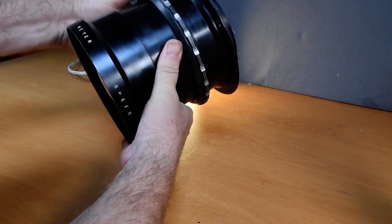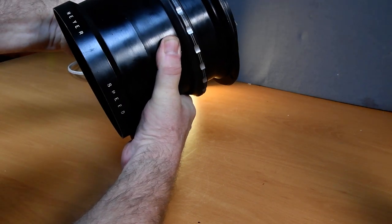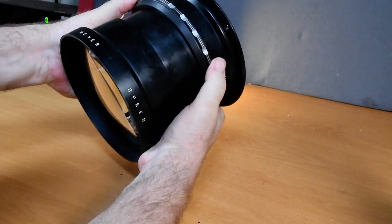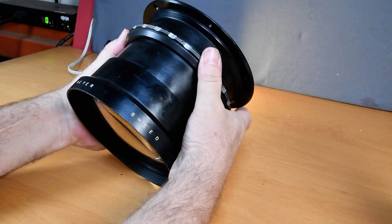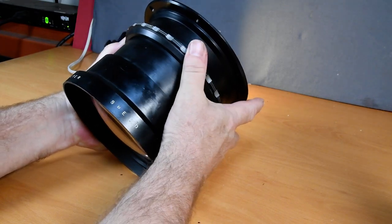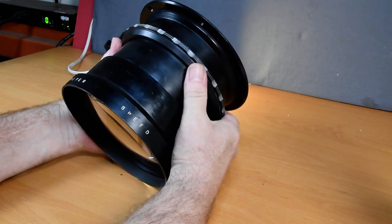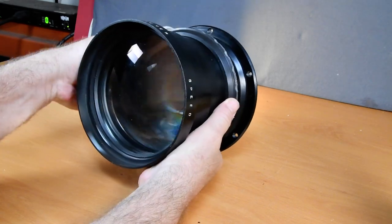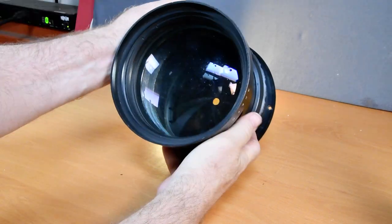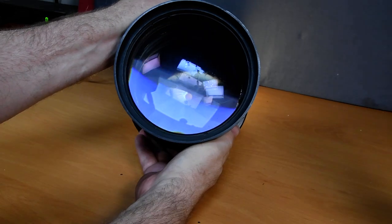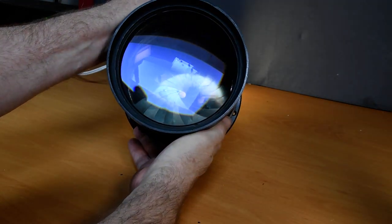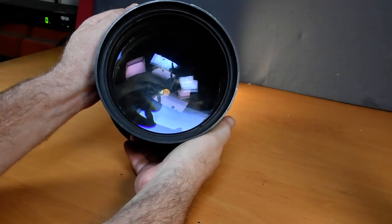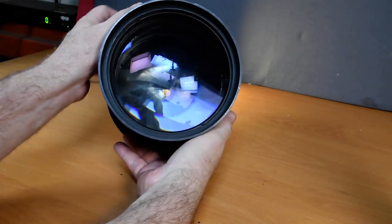Now let me see if I can turn this, but it's a lot harder to turn it when it's not mounted on anything and the thing weighs about 17 pounds 7.8 ounces. So just to turn the aperture ring without it mounted is very difficult, especially handheld like I'm doing.